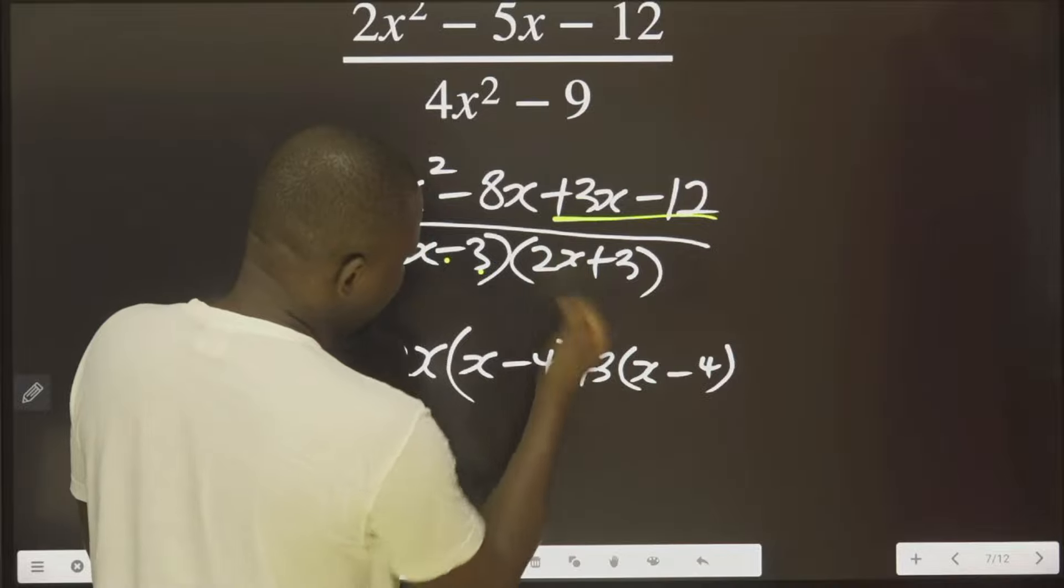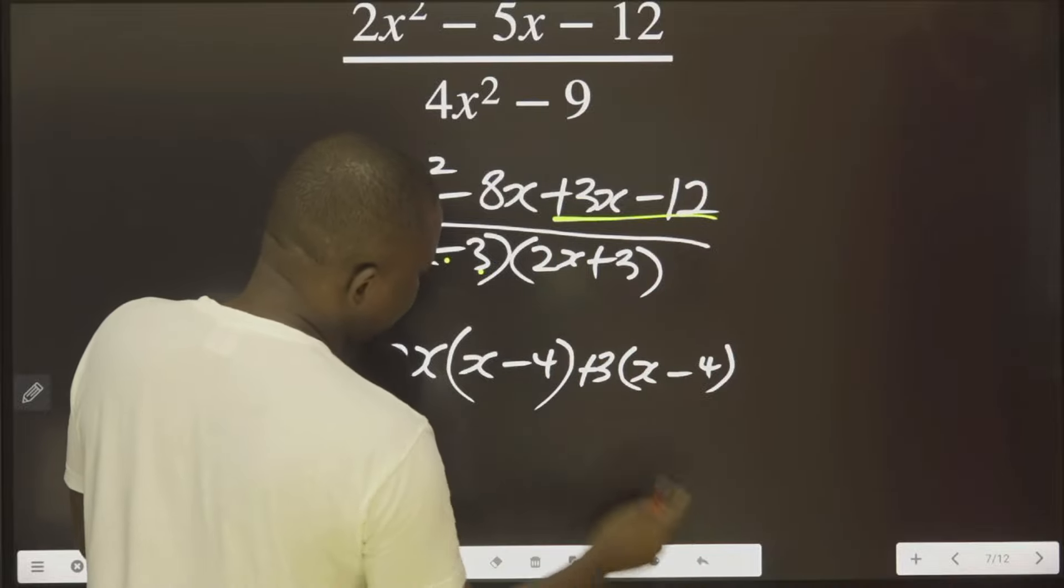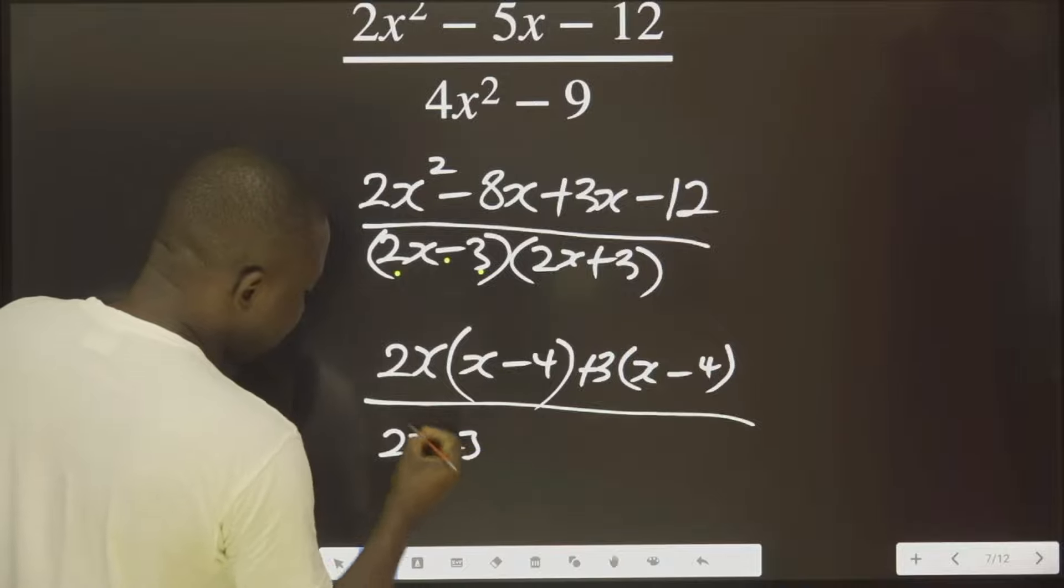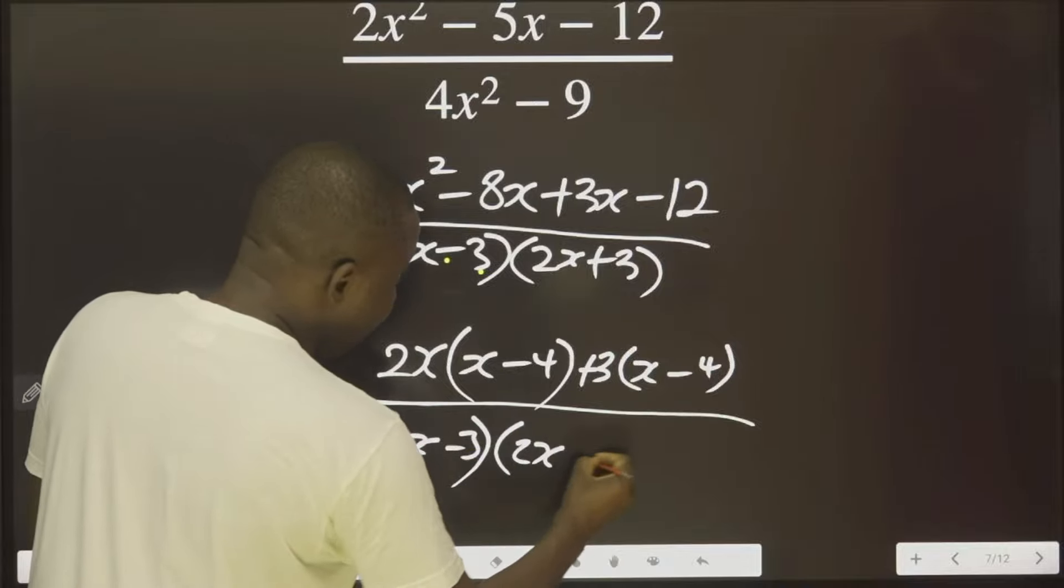What you put outside here now is plus 3 to get these two. This multiplied by this, you have this. This multiplied by this, you have this. All over 2x minus 3, 2x plus 3.